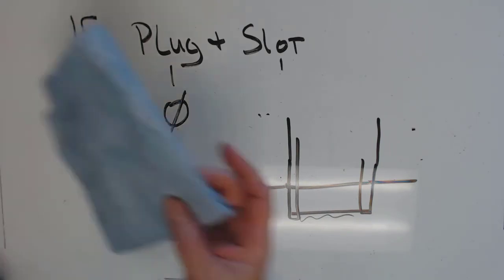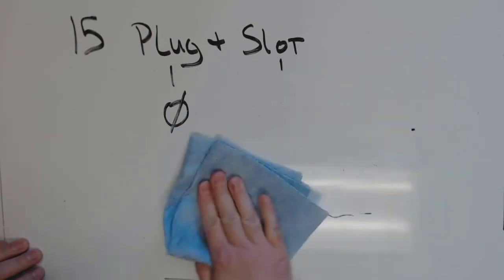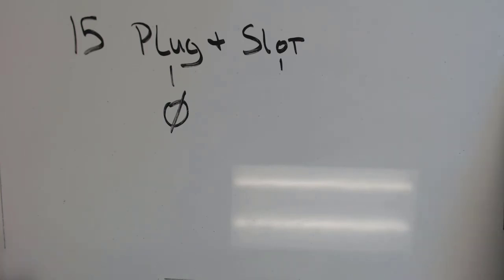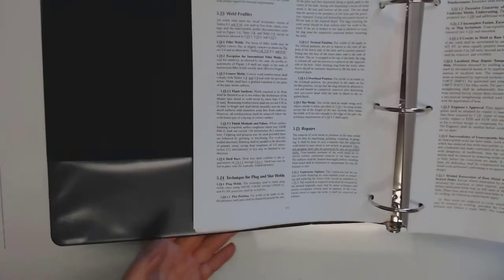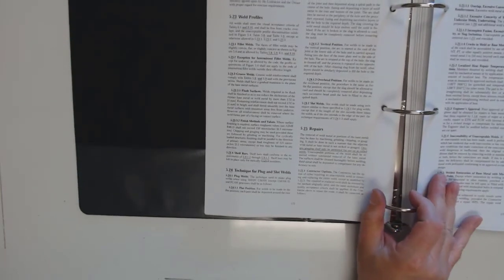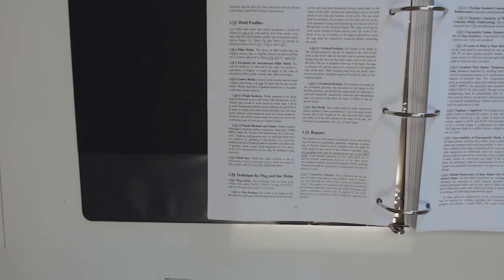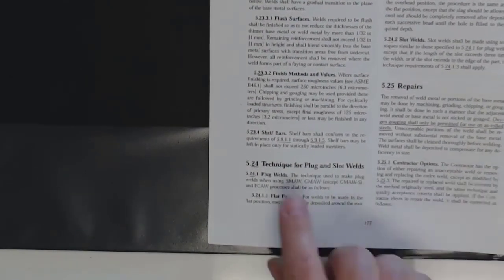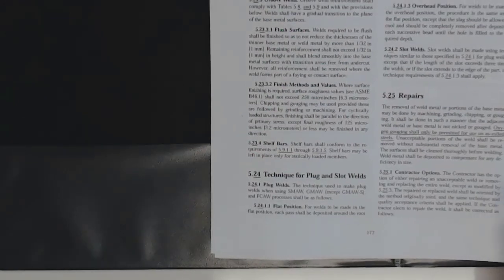So now we've talked all about plug weld symbols and all that stuff. So how do we actually weld them? Well, believe it or not, the AWS is incredibly clear about that. They actually have a part of their welding code to deal specifically with spot and plug welds. Let me grab it. So here is my giant copy of, this is 2015 version of AWS D1.1. So right down here, 5.24, technique for plug and slot welds.